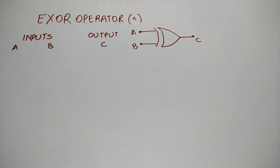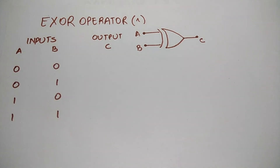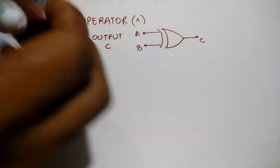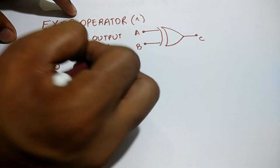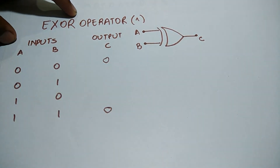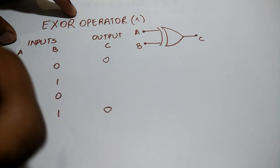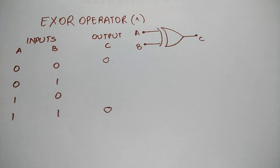You can see the symbol in the bracket of the XOR operator, which is used in embedded programming. There are two inputs and one output. As per the condition, if both inputs are the same then the output is low. The first and the fourth conditions have both inputs the same, so the output will be low. The remaining conditions have high outputs, meaning they have alternating inputs.